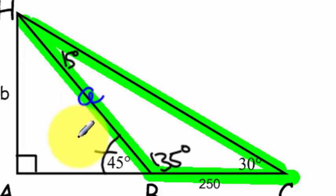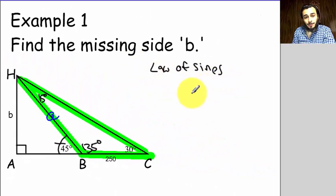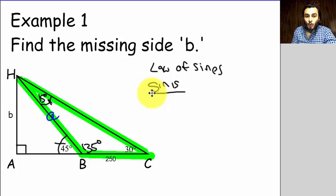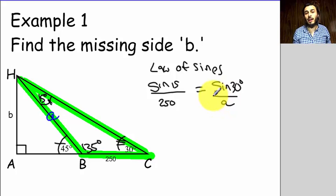So what could I do to find the missing side A? Well, I could use the law of sines. So using the law of sines, I could say the sine of 15 degrees over the opposite side, which is 250, equals the sine of 30 degrees over the opposite side, which is A. So there I have now an equation with one variable, and that's something that I can solve.